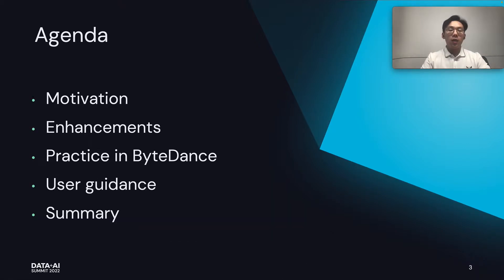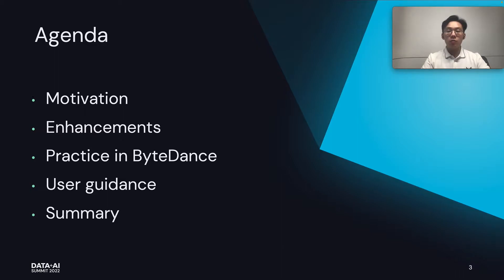Let's take a look at the agenda. Today's agenda will start with background and motivation, talking about issues about enabling skew join optimization in practice. Then we discuss the enhancements we made to the Spark engine with respect to skew join, and we take these enhancements into practice in ByteDance. Then we will share some of the learnings we got in the process of enabling skew join with user guidance, and finally conclude with a summary.